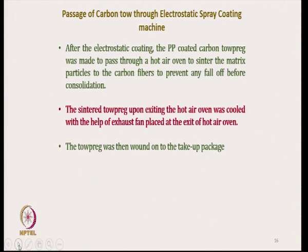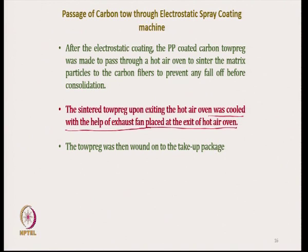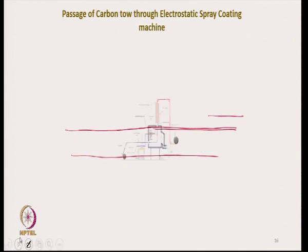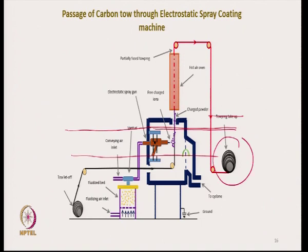After electrostatic coating, the PP coated carbon tow is made to pass through the hot air oven. The sintered tow preg upon exiting the hot air oven was cooled with the help of an exhaust fan placed at the exit of the hot air oven. This helps in eliminating any sticking on the rollers. The tow preg was then wound on a take-up package.